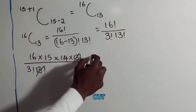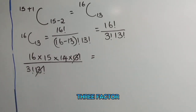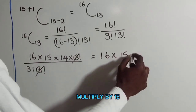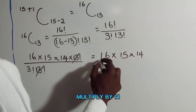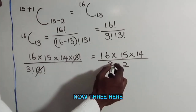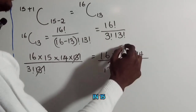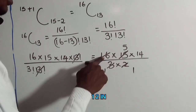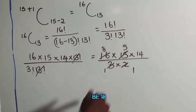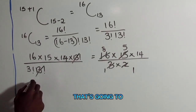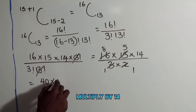The 13 factorials cancel out. So 3 factorial is 3 times 2, which gives us 6. Now I have 16 multiplied by 15 multiplied by 14, all over 6. Simplifying: 3 goes into 15 giving 5, 2 goes into 16 giving 8. So we have 8 multiplied by 5, which is 40, multiplied by 14.